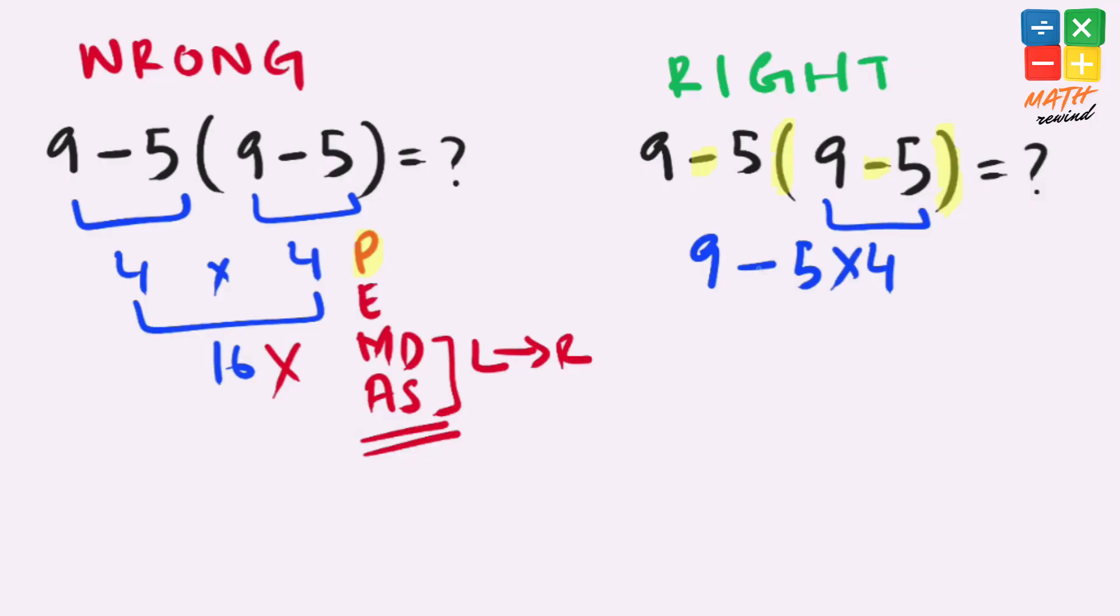Now we have two operators present in this expression, subtraction and multiplication. And according to the rules, multiplication has higher priority than subtraction. So we must solve this multiplication first. 5 times 4 gives us 20.